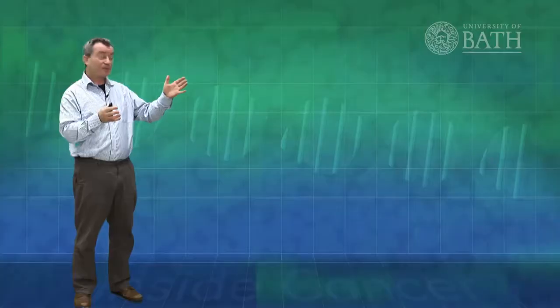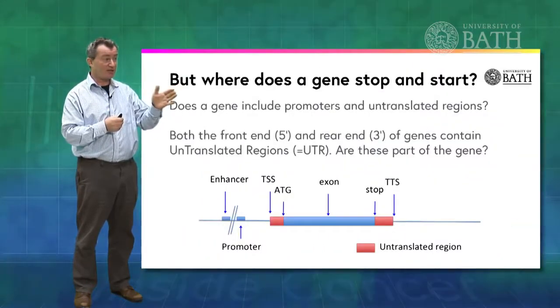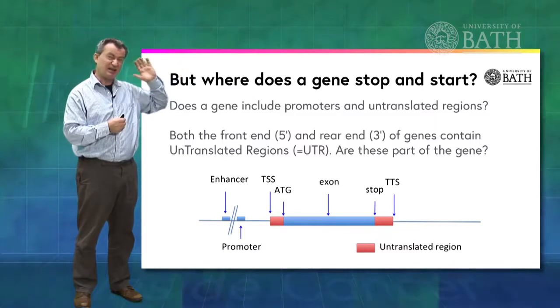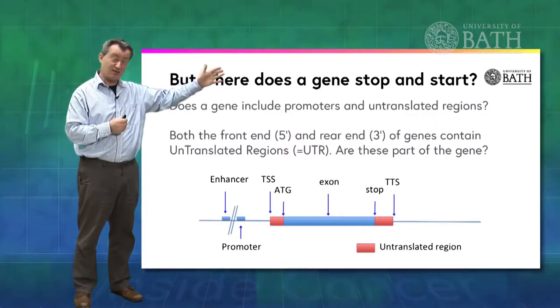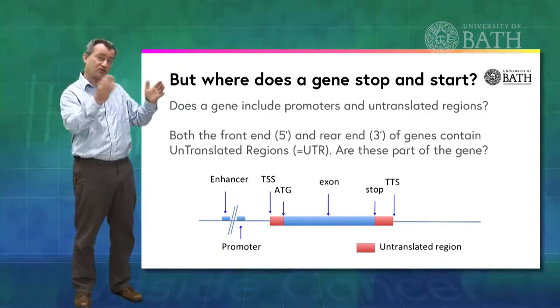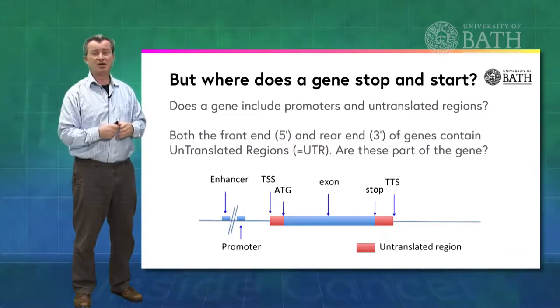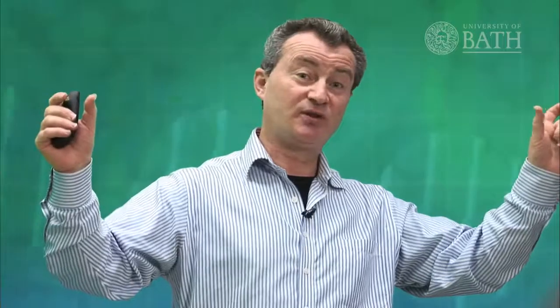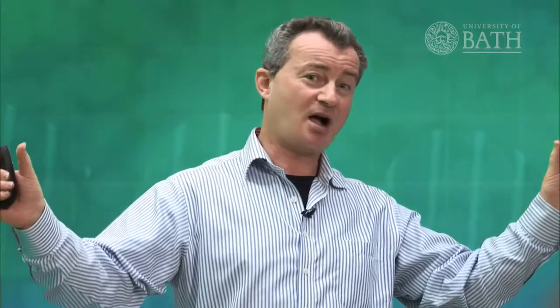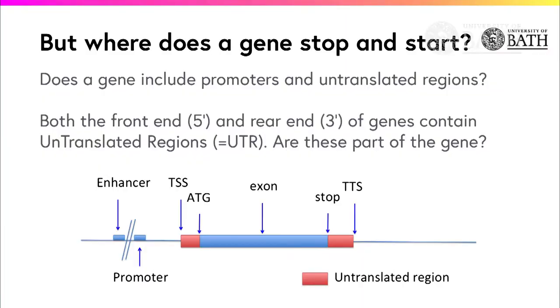Even in the simplest case — we look in bacteria, for example — you will find that while the protein coding information starts a little way into the gene with, as shown here, an ATG (that's the information that codes for methionine amino acid, which starts proteins), then you have the rest of the protein coding information, and you have a bit of RNA after that. So you have these blocks of untranslated RNA, both before and after the protein coding segment. These we call the 5' untranslated regions and the 3' untranslated regions. 5' is the front end, 3' is the back end. So maybe our gene starts from where the untranslated regions start and stops at the other end.